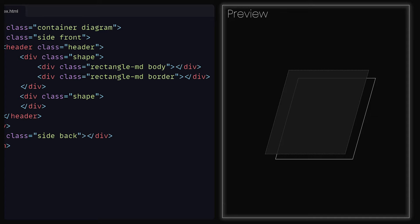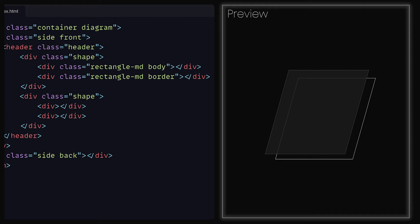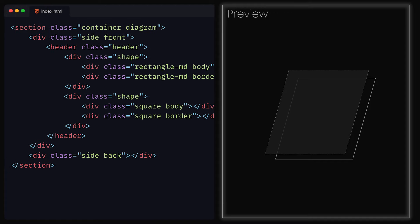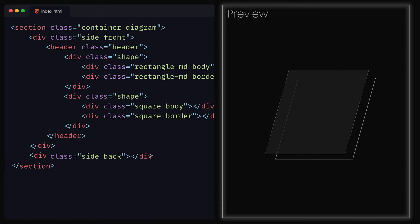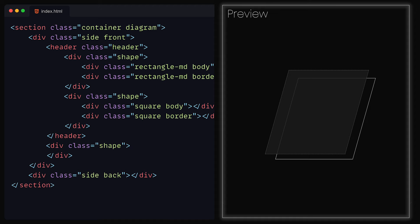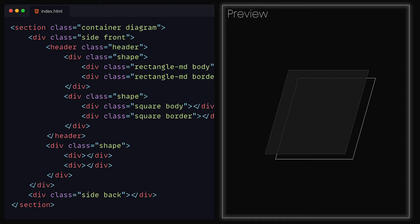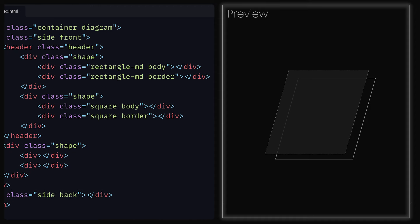Within the first shape div, we can add another set of divs — give the first one the classes RectangleMD and Body, and for the sibling div underneath it, the classes RectangleMD and Border. For the second div, we can do something similar with two divs: the first one having the classes Square and Body, then for the second div the classes Square and Border. Underneath the header, we can add our last div that will take the class shape. Within that, two divs with the first having the classes RectangleLG and Body, and the second the classes RectangleLG and Border.